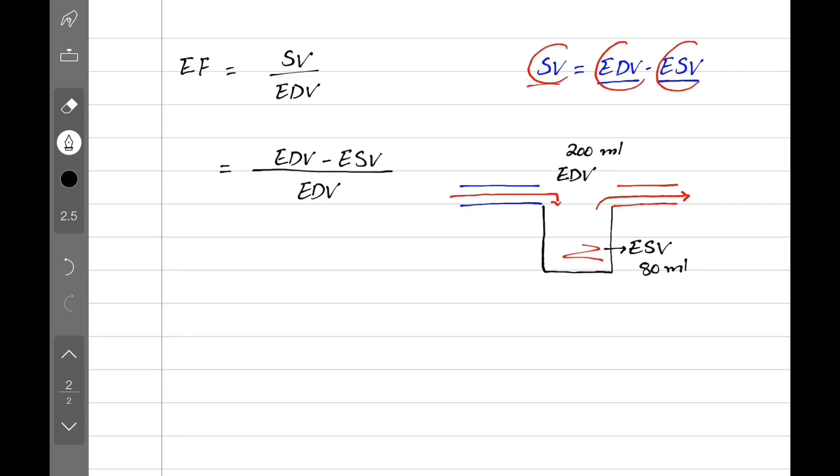So the ejection fraction is 200 minus 80 divided by 200 or 0.6. Multiply it by 100 and we get our answer in percentage. So the ejection fraction is 60%.